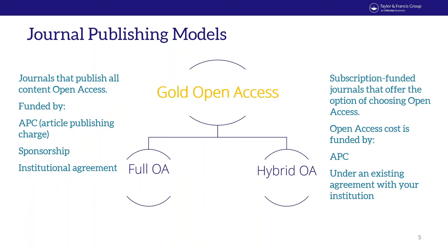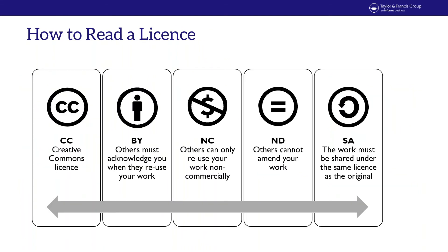All APC information should be clearly presented on the journal website under instructions for authors — there should be no surprise fees introduced late in the process. Often your funder or institution will cover the charges. For Taylor and Francis fully open access journals, authors based in different parts of the world may be eligible for waivers, so it's important to do your research ahead of time.